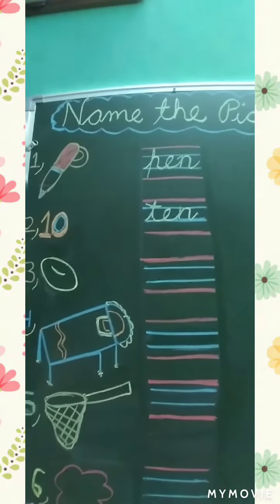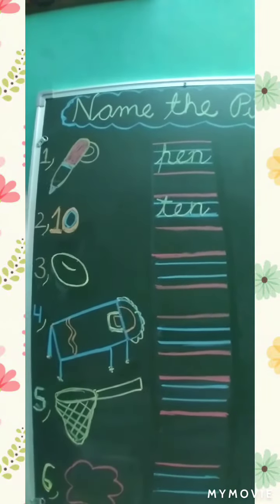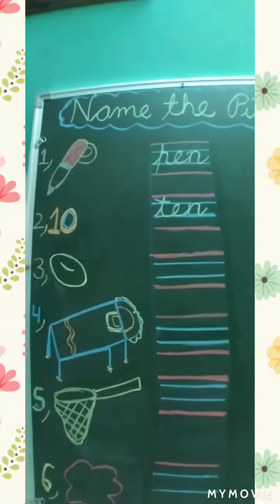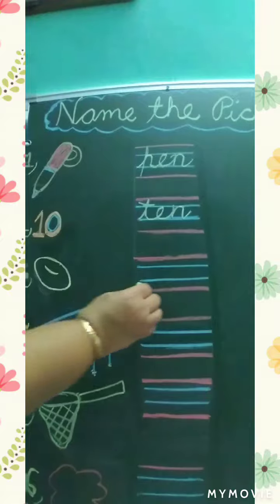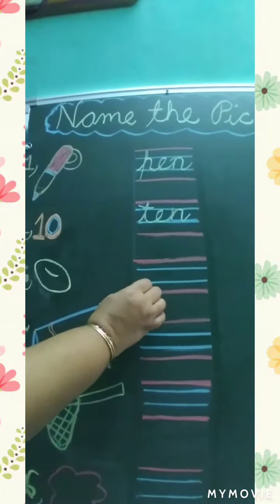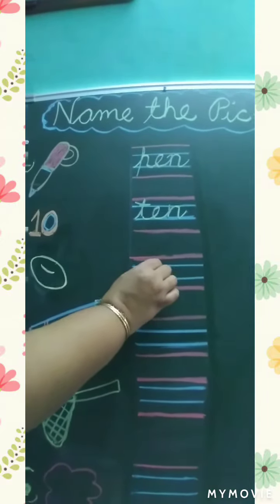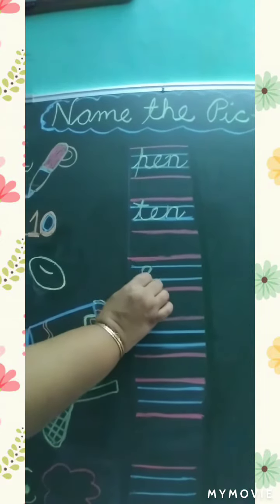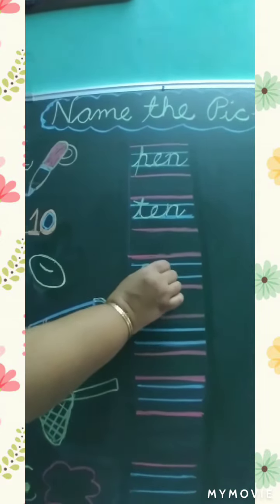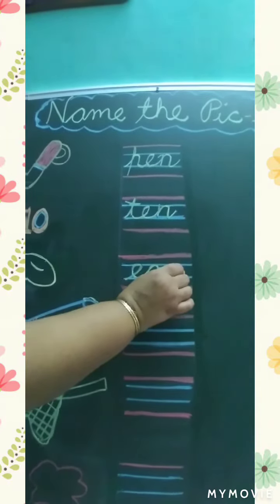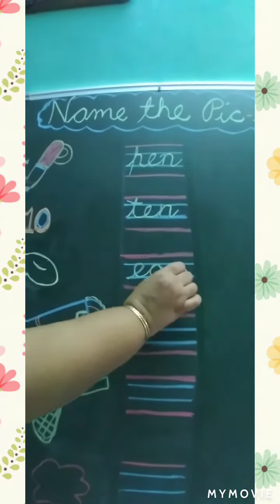Third picture kiski hai? This is picture of egg. Ande ko kya bolte hai? Egg bolte hai. E, double G, egg.